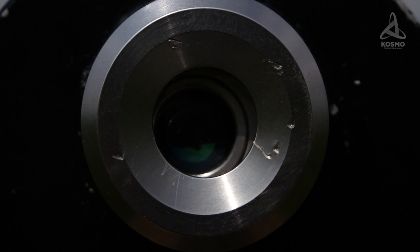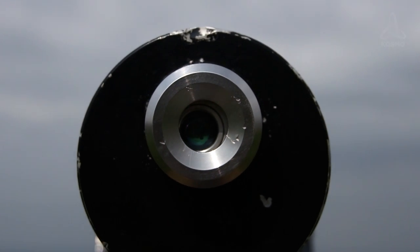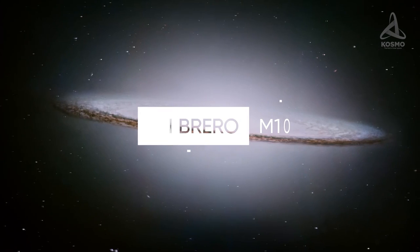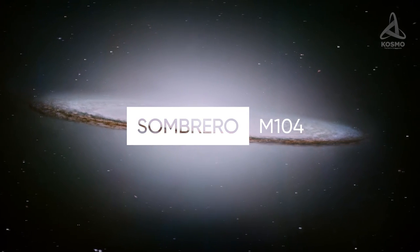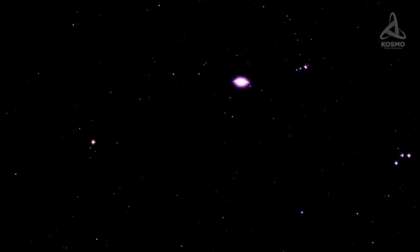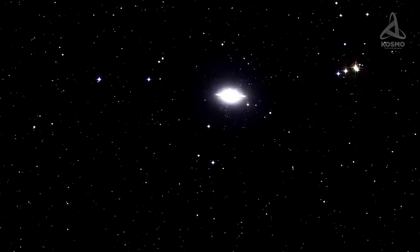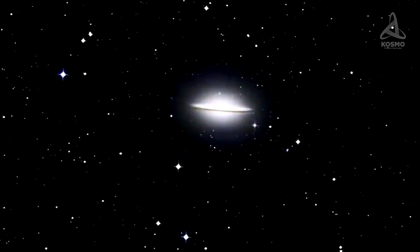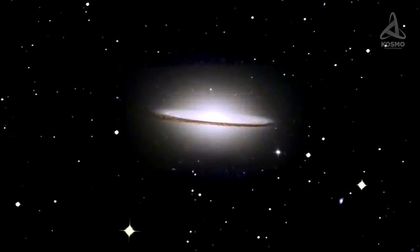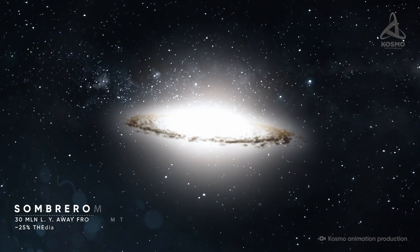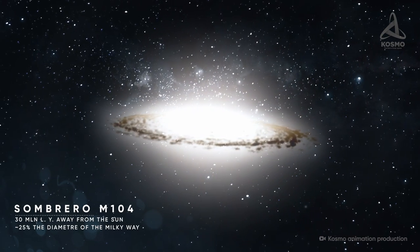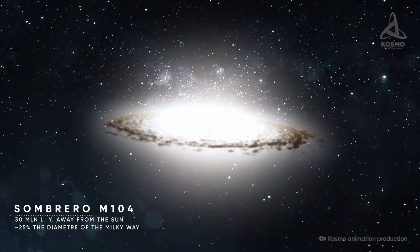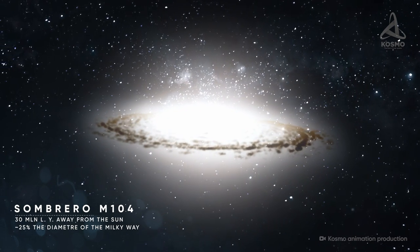One of the few galaxies one can observe through an amateur telescope is the so-called Sombrero Galaxy, official designation M104. It lies 30 million light-years away from the Sun, and its diameter is roughly four times smaller than that of the Milky Way. The Sombrero Galaxy's outstanding feature is a massive ring of dust and cold hydrogen enveloping it. Observations show that it is here that most young stars are born.